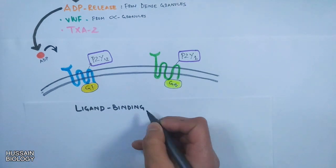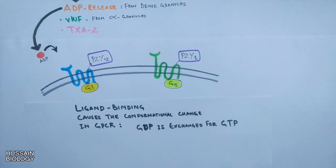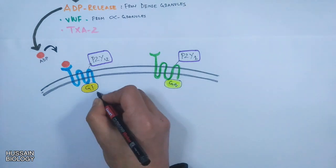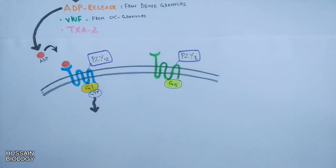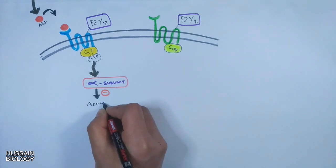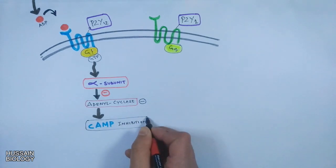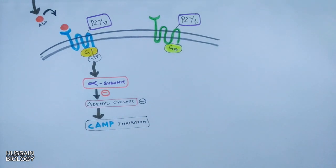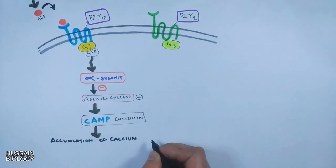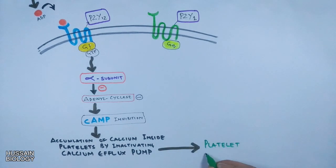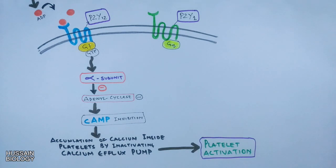Upon ligand binding there is a conformational change in the GPCR where GDP is exchanged for GTP, which drives the signaling pathway. When ADP binds to the P2Y12 receptor, it activates the GPCR by exchanging GDP for GTP. The Gi alpha subunit inhibits adenylyl cyclase, which deactivates the cAMP pathway. The cAMP secondary messenger is rendered inactive, leading to accumulation of calcium inside platelets by inactivating calcium efflux pumps, ultimately causing platelet activation.